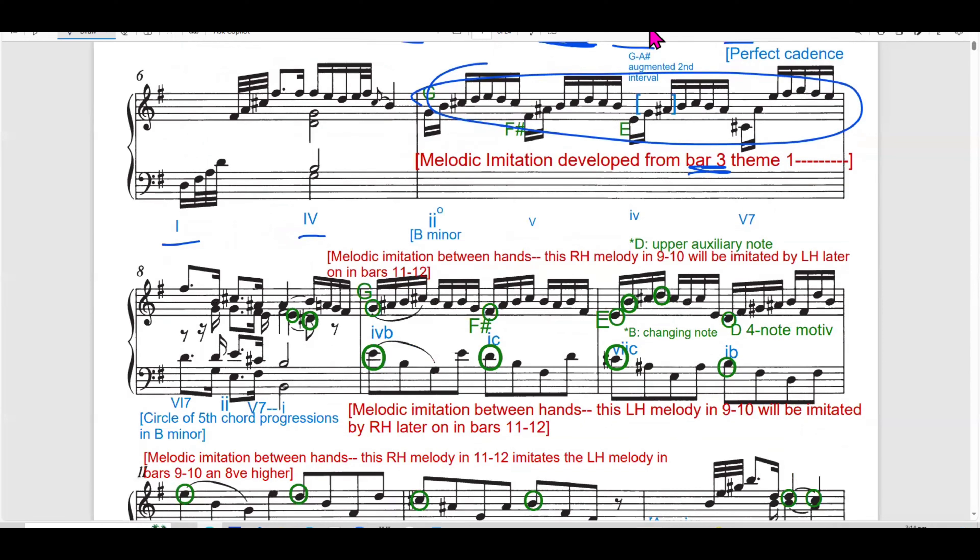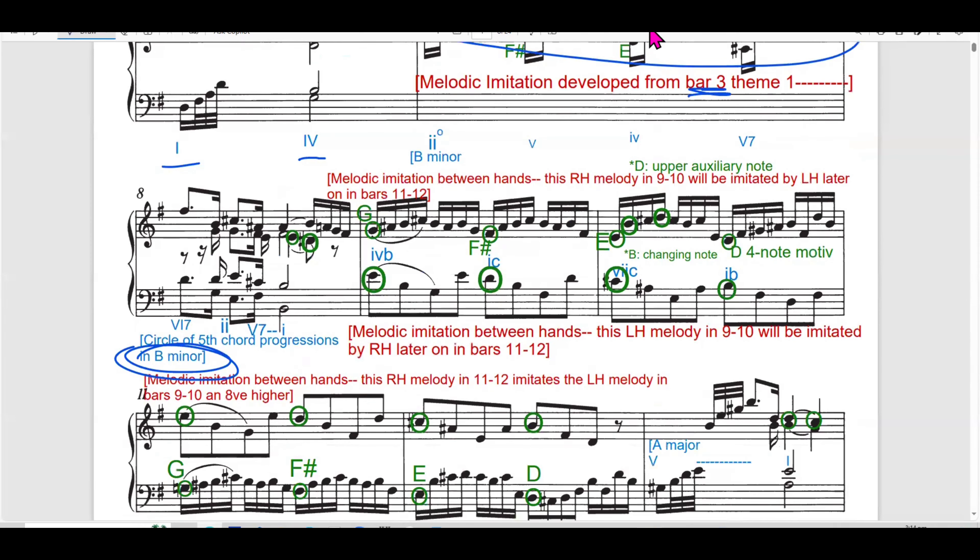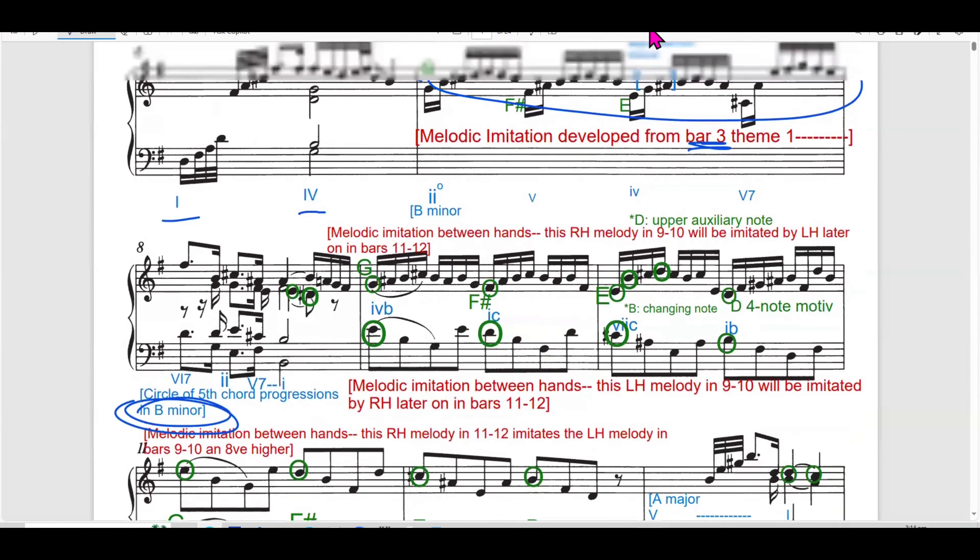And the shift to B minor is signaled here. So, it's shifted to B minor. And the harmonic progression moves through a 2, 5, 6, 2, 5, 1 cadential. I think it's a circle of 5 chord progression. And it echoes between the hands.